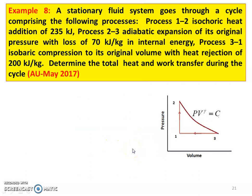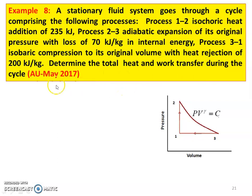Next problem, Example number 8, from May 2017 question paper. A stationary fluid system goes through a cycle comprising the following processes: Process 1 to 2 — isochoric heat addition of 235 kilojoules. Process 2 to 3 — adiabatic expansion to its original pressure with a loss of 70 kilojoules of internal energy. Process 3 to 1 — isobaric compression to its original volume with heat rejection of 200 kilojoules. Determine the total heat and work transfer during the cycle.